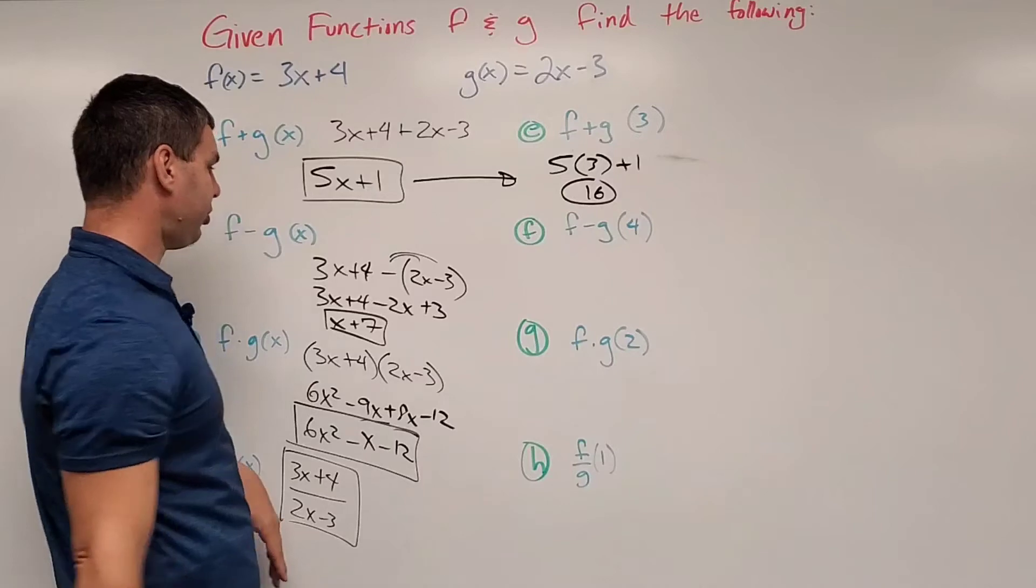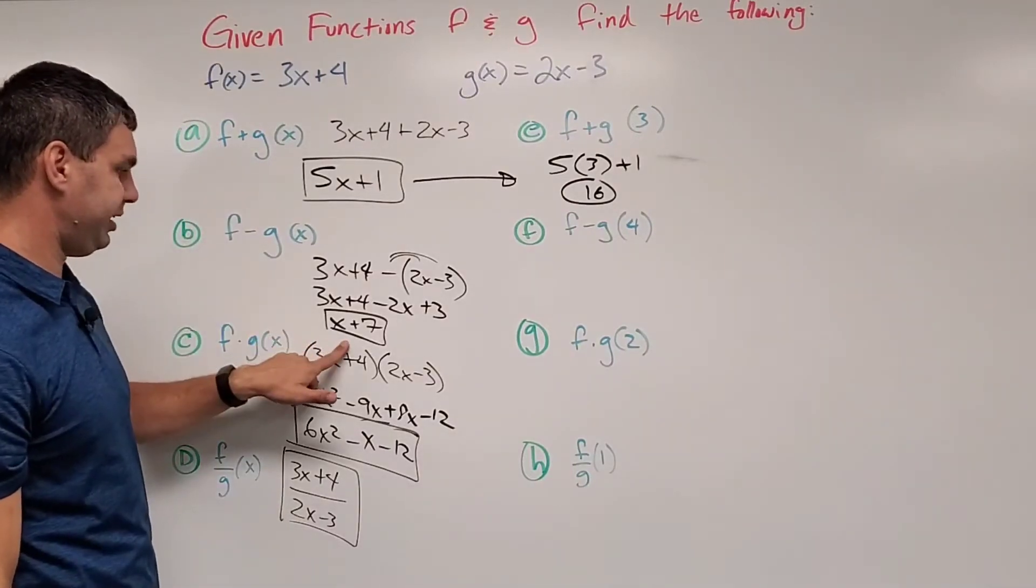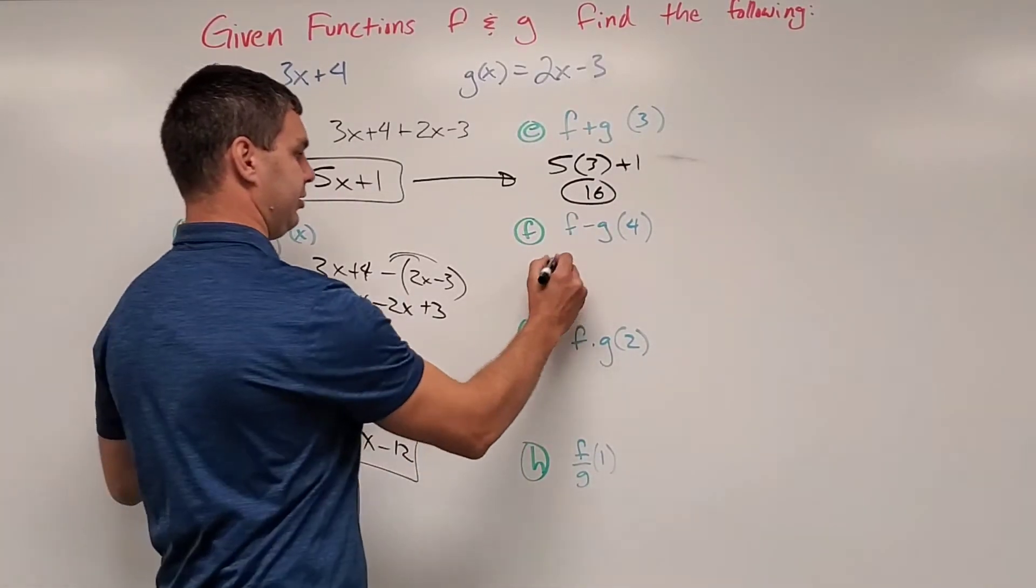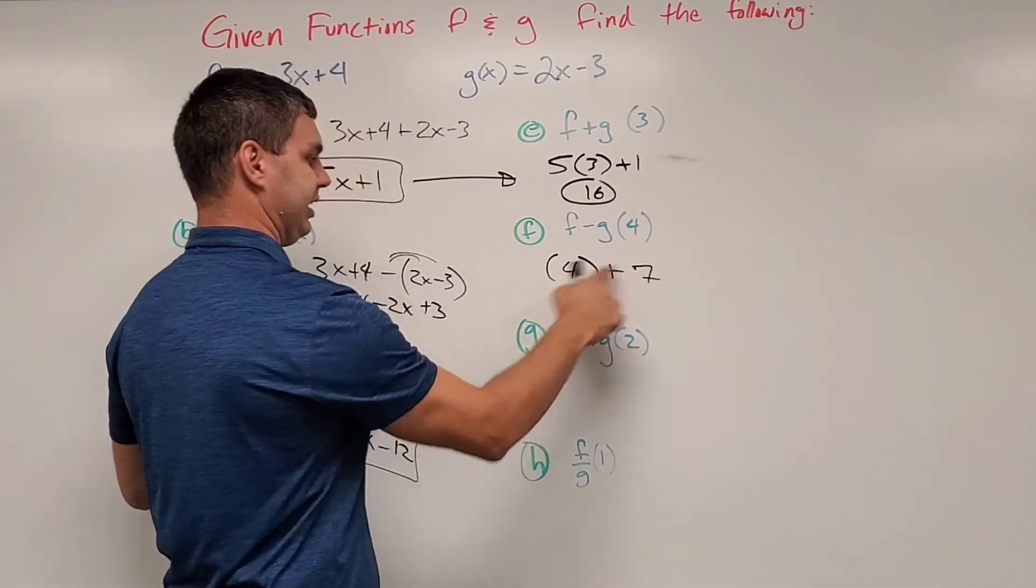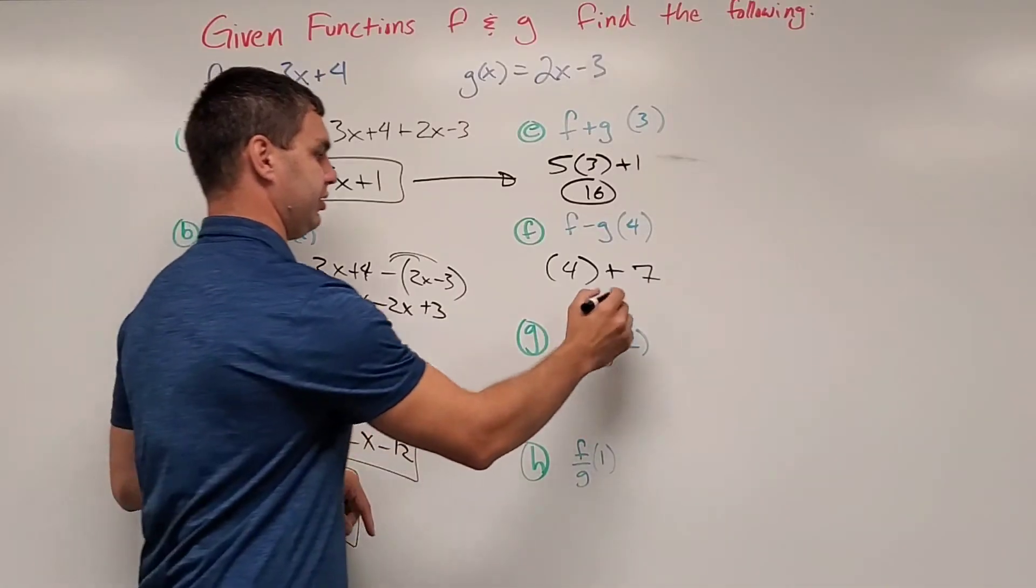f minus g of 4. Well, again, f minus g gave me x plus 7. So now, instead of x, I'm going to do 4 plus 7, putting that inside the blank. 4 plus 7, of course, is 11.